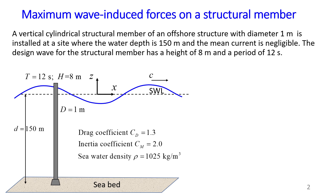I show all this data on a diagram and define my coordinate system. My origin starts at still water level (SWL). My longitudinal coordinate is x and the vertical coordinate is z, so z is negative below still water level. I also show some constant values which are given: the drag coefficient, inertia coefficient, sea water density, and C, which is the speed of the wave.